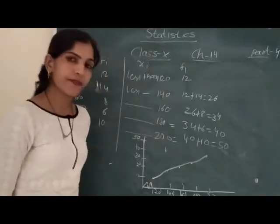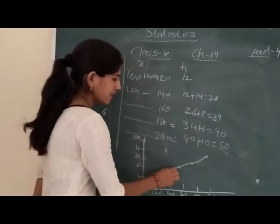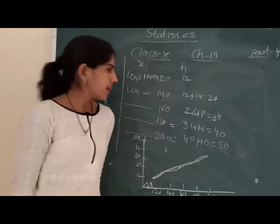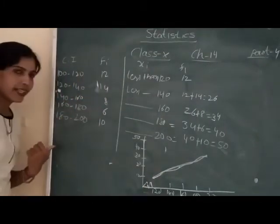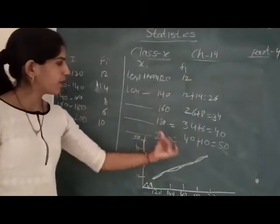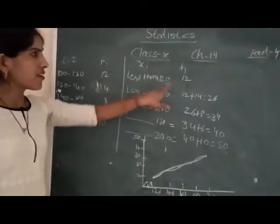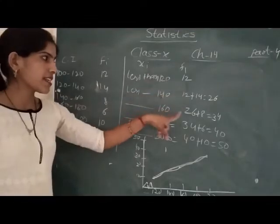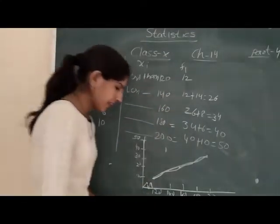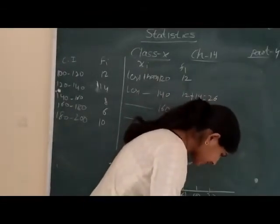Okay? This is our frequency curve. Whatever class interval is given, you convert it to less than and more than and make the points. 120 is 12, 140 is 26 like this. And you plot it on the graph. Let's look at a more than example like this.